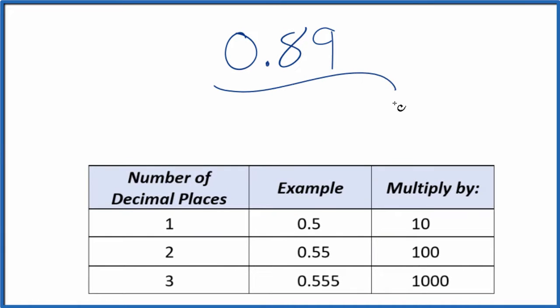Let's write the decimal 0.89 as a fraction. So first off, let's call it 0.89 over 1. We're just dividing by 1, so we don't change the value, but now we have the start of a fraction.